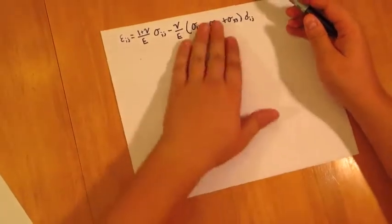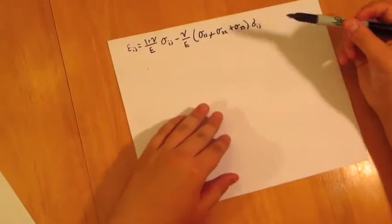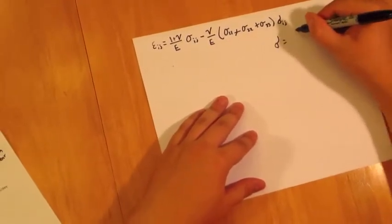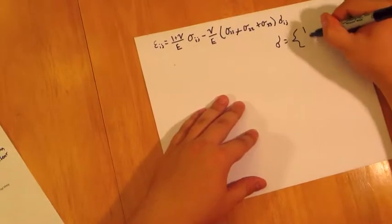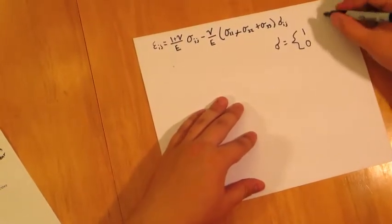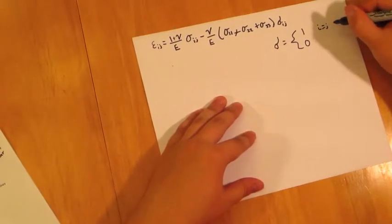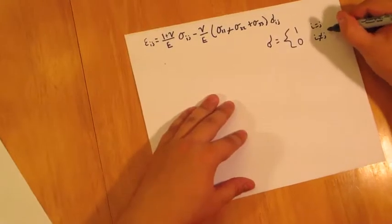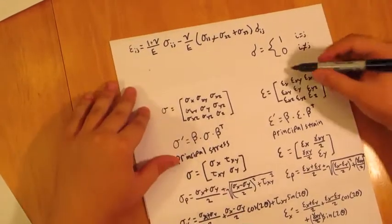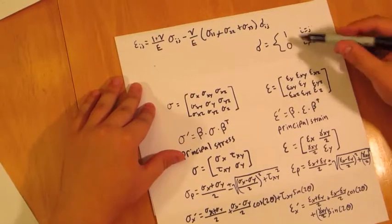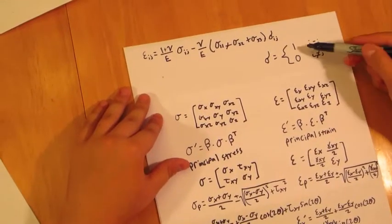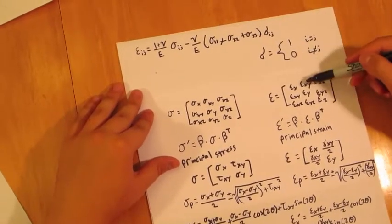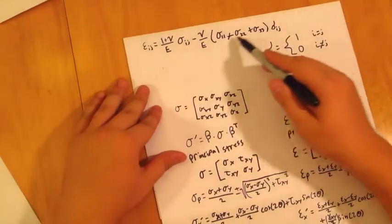Another thing to clarify is delta_ij. It equals 1 when i equals j, and 0 when i does not equal j. So for epsilon_x, that's index 1,1, so i equals j and delta is 1. For epsilon_xy, that's index 1,2, so i ≠ j, delta is 0, and that entire term disappears.